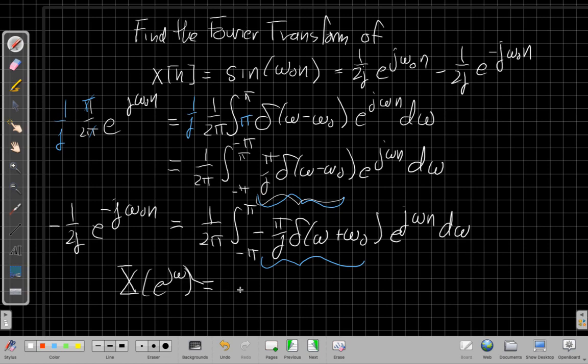X(e^(jω)) will be π/j δ(ω - ω₀) - π/j δ(ω + ω₀). So again, I have two impulses, my sine wave or a cosine. The Fourier transform is just two impulses. Whether it's sine or cosine depends on is it real or imaginary and what the signs are.